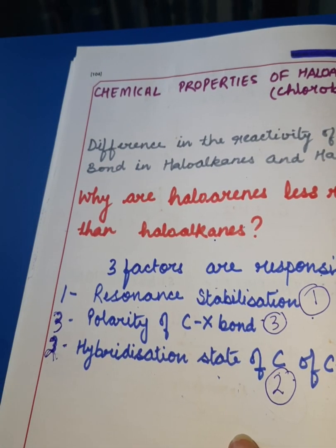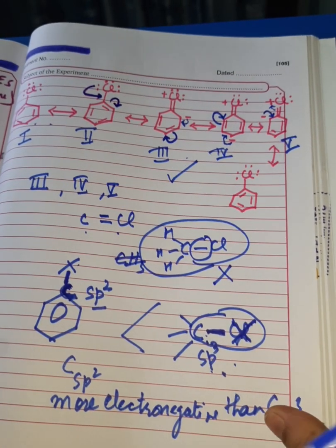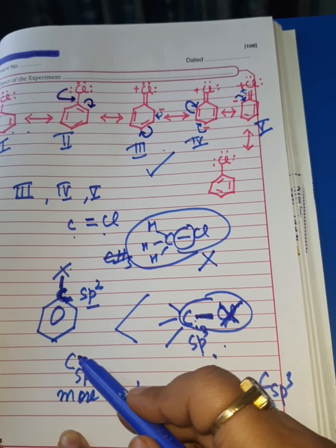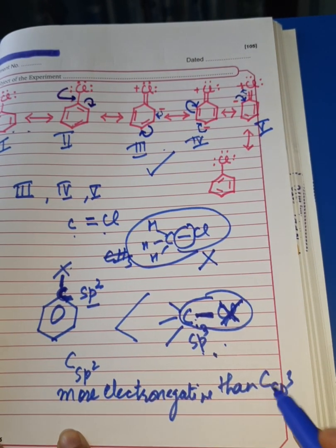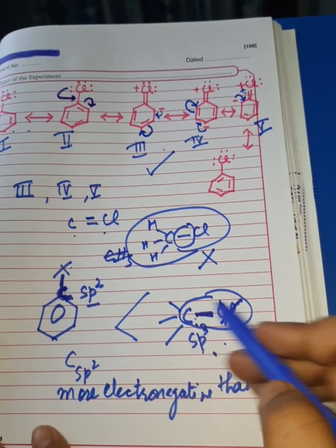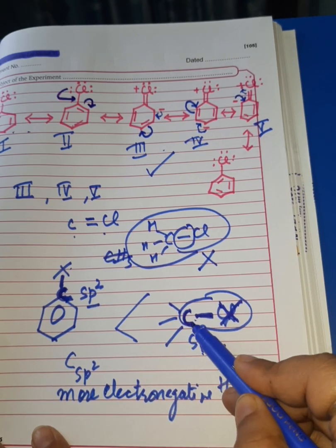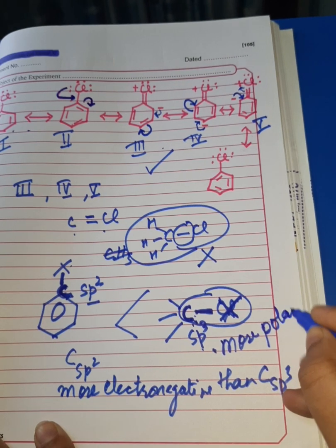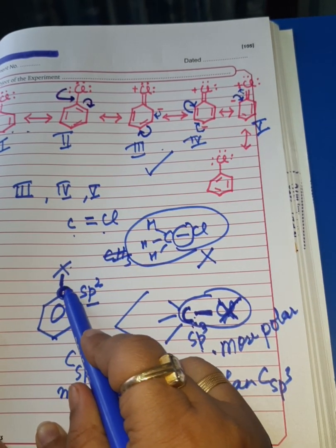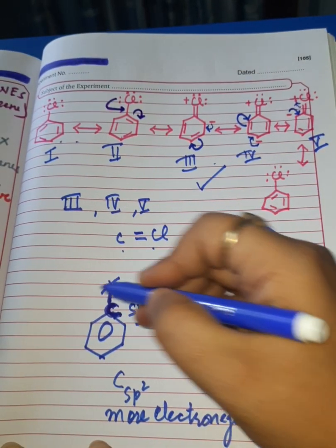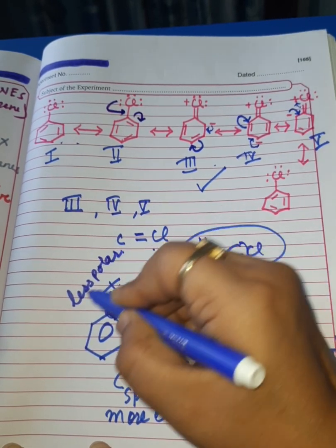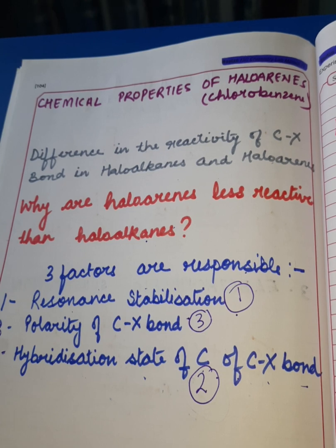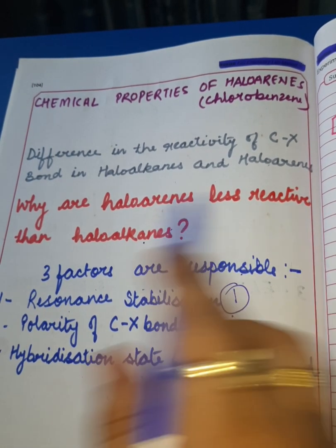Now the third factor: polarity of the C-X bond. In haloarenes, the carbon is sp2 hybridized and more electronegative than the sp3 carbon in haloalkanes. The one which is less electronegative — that is, the sp3 carbon in haloalkanes — will form a more polar bond with X. Whereas in haloarenes, since the carbon is more electronegative, the C-X bond will be less polar. So these three factors together are responsible for and explain why haloarenes are less reactive than haloalkanes.